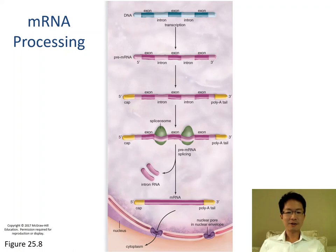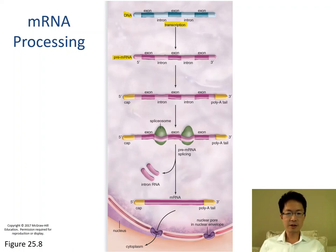mRNA processing is very simple. We start with DNA, and then DNA undergoes transcription. DNA is transcribed into pre-messenger RNA. Pre-messenger RNA consists of exon and intron. Then we put a guanine cap at the 5' end and a poly-A tail at the 3' end, and then we have something called the spliceosome.